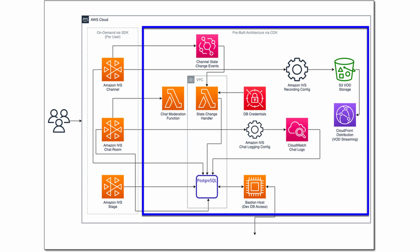As a reminder, there are two categories of AWS resources that make up the cloud architecture of the StreamCat application. The first category is a set of pre-built resources — things like the Amazon RDS Postgres instance, Amazon EventBridge rules, and AWS Lambda functions that handle automated chat moderation and persistence of live stream events. These pre-built resources were deployed to the AWS Cloud via the AWS Cloud Development Kit, or CDK.